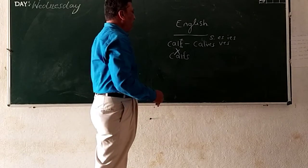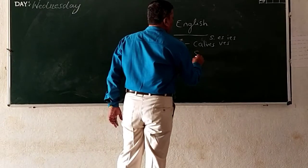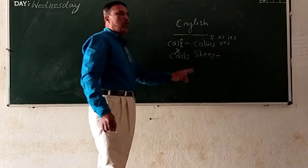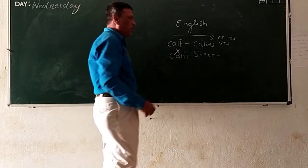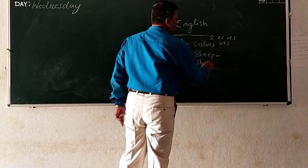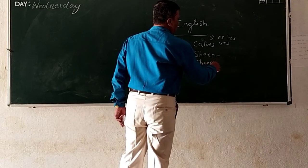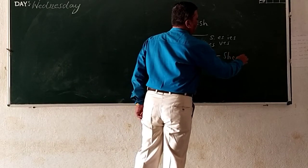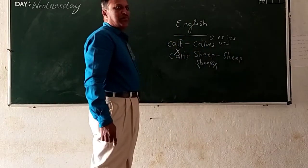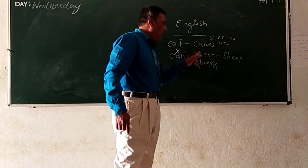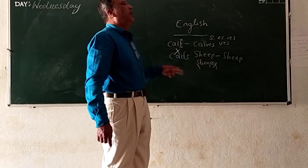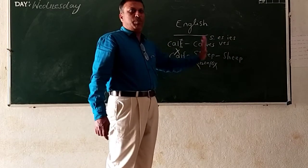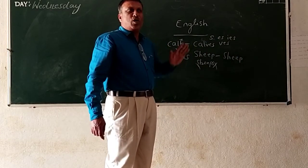And one more example I will give you: sheep. What is the plural of sheep? Is it sheeps? No, it's wrong. Sheep. Sheep. Same. There is no change. In the singular it is sheep, and also in plural it is sheep. No sheeps, just sheep.